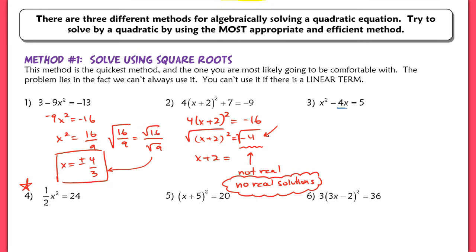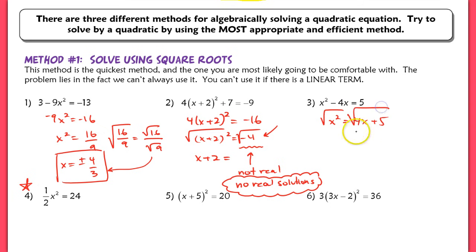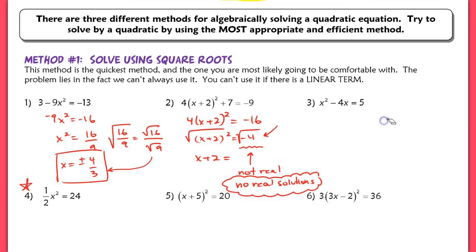Number 3 is not something you can use square roots with because you have a linear term, meaning this is to the first power. Whenever you see this, you cannot use the square root method. Some of you will incorrectly try to isolate x squared and then square root both sides, but you cannot take the square root of 4x plus 5, and now you have an x on both sides of the equation. This is why it would not be correct for solving x. So in this case, we have to factor this problem.